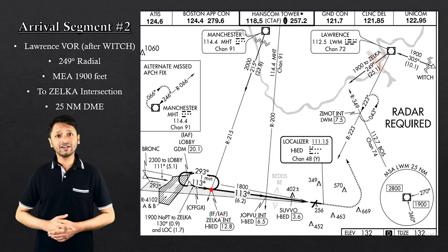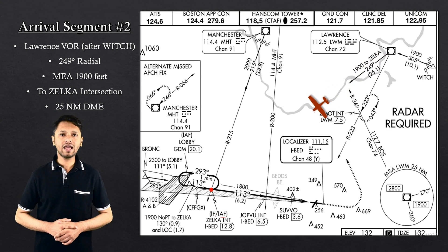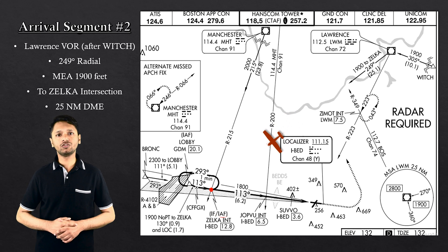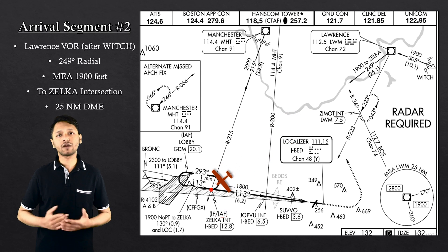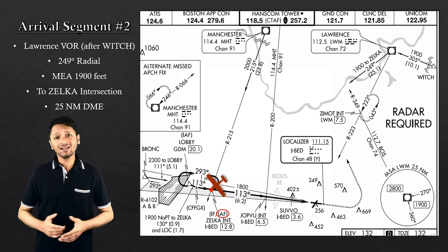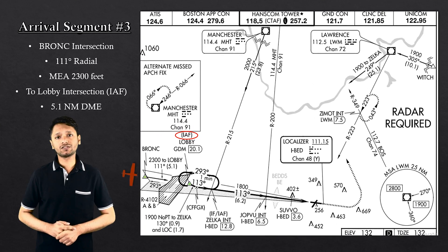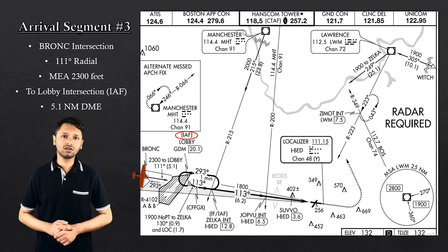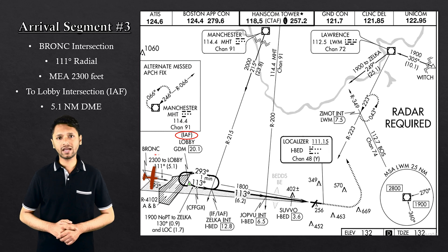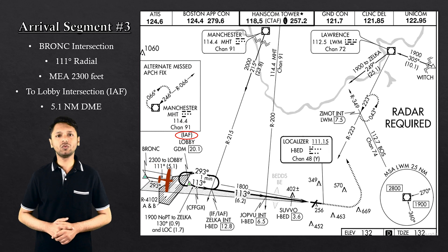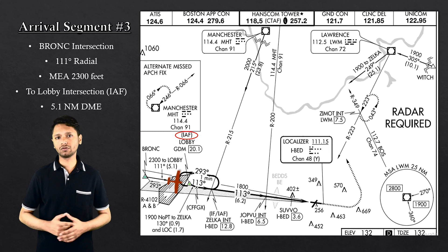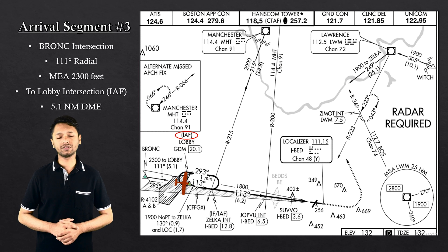The second arrival segment is from the Lawrence VOR, on the 249 radial at 1,900 feet MEA to ZELTA intersection, about 25 nautical miles from the Lawrence VOR. The final arrival segment begins from the Bromky intersection, transitioning on the 111 radial at 2,300 feet to the Lobby intersection, which is another initial approach fix, at about 5.1 nautical miles from the Bromky intersection.